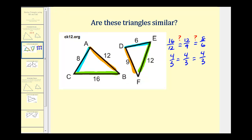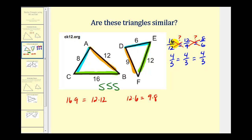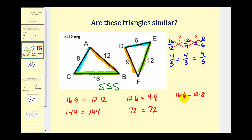So these two triangles are similar by side-side-side. If you have difficulty simplifying fractions, we could also just check cross products: is 16 times 9 equal to 12 times 12, and is 12 times 6 equal to 9 times 8? We should also check that 16 times 6 equals 12 times 8. We get 144 equals 144, 72 equals 72, and 96 equals 96. All three cross products are equal, verifying that all three sides are proportional. Therefore, these triangles are similar using side-side-side similarity.